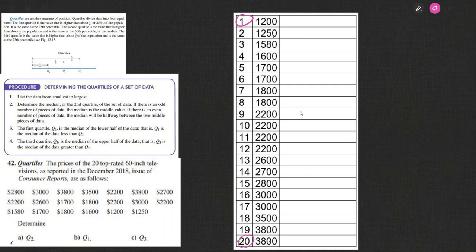If there's 20 pieces of data, then the median is going to fall between the 10th and the 11th. So between the 2200 and 2200. Well, since they're the same, it's just the 2200.